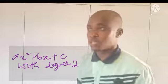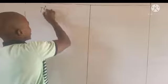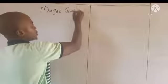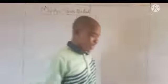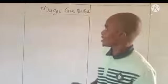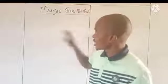Today we are going to be looking at algebraic expressions. We will be looking at how we can factorize algebraic expressions, most especially quadratic expressions, by using what we call the magic cross method. I believe some of you are just hearing this magic cross method for the first time, so the gist there is that magic.